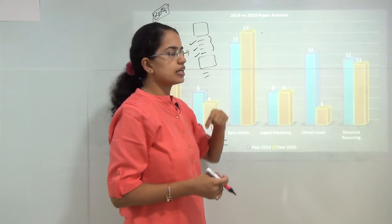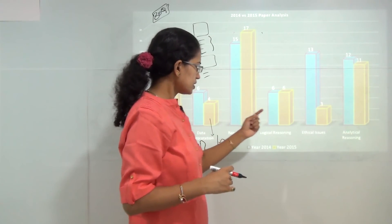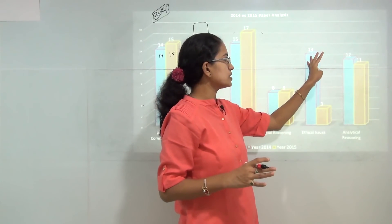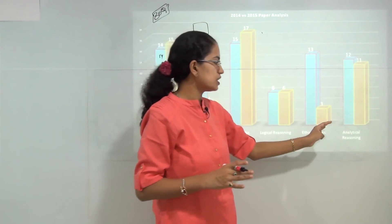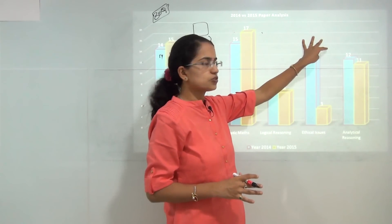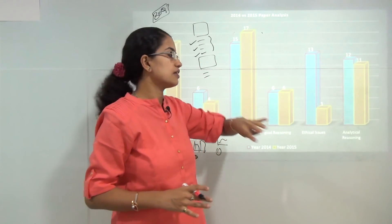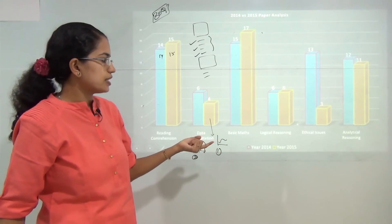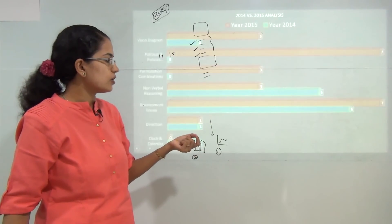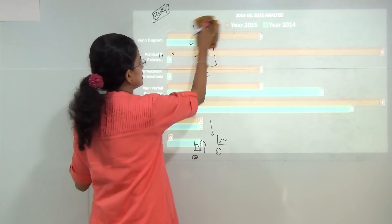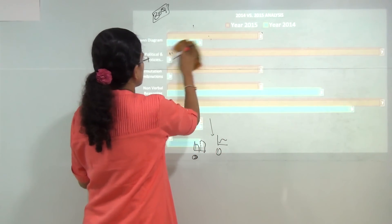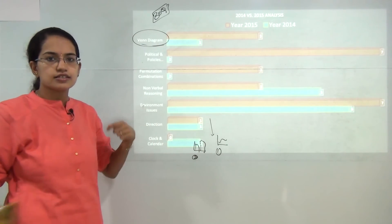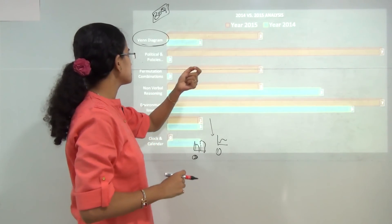Questions on basic maths definitely increased, with more questions on HCF, LCM, ratio and proportion. Logical reasoning questions were more or less the same. Ethical issues had around 13 questions in 2014, but only three in 2015 — a lot of fluctuation. Analytical reasoning was more or less the same. Notably, questions on Venn diagrams drastically increased, so we will cover a dedicated session with quick shortcuts for solving Venn diagram problems.